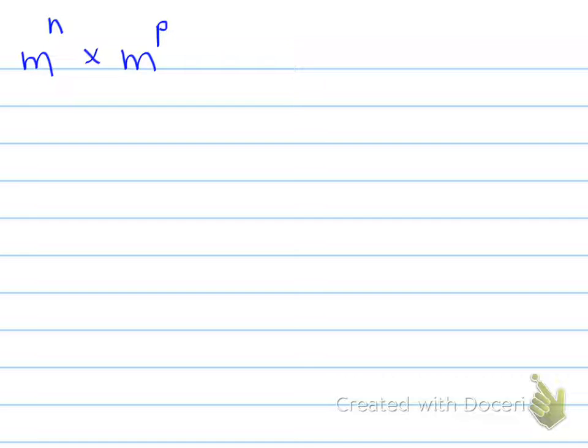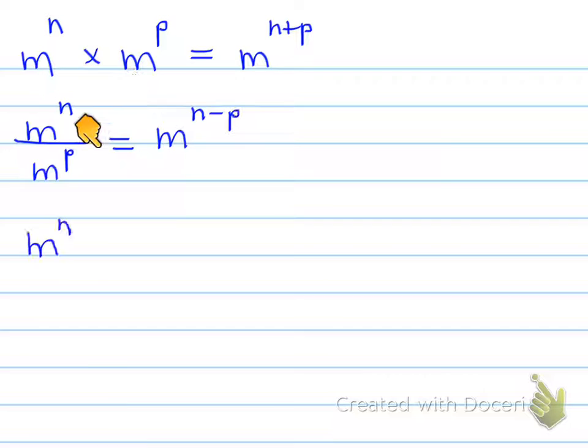So m to the n times m to the p, we're going to review some of the rules for exponentials. When we have two powers being multiplied and you have the same base, what do you do with the exponents? That's right, you add them. The next rule is m to the n divided by m to the p. What do we do here? That's right, we subtract the exponents, m to the n minus p. Let's look at another one, m to the n all raised to the power of p. That equals m to the n times p, np.